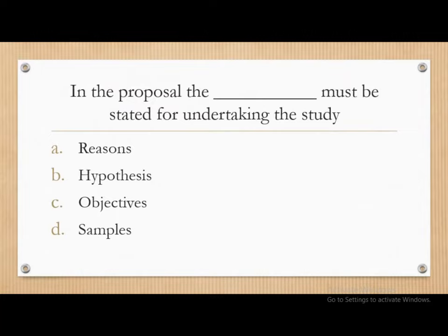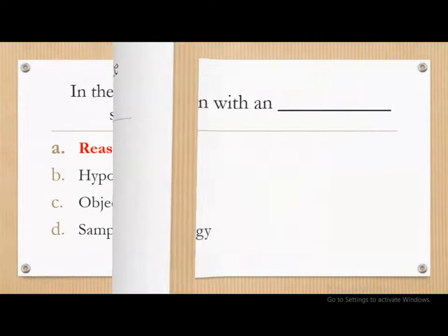In the proposal, the dash must be stated for undertaking the study — options are: reasons, hypothesis, objectives, or samples. Generally in a proposal all of these are included, but the question asks what must be stated for undertaking the study. The correct answer is reasons — in the research proposal, the reasons must be stated for undertaking the study.